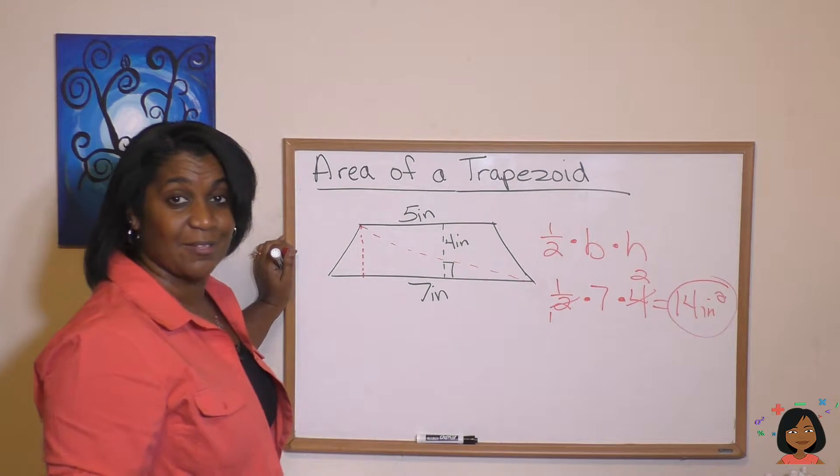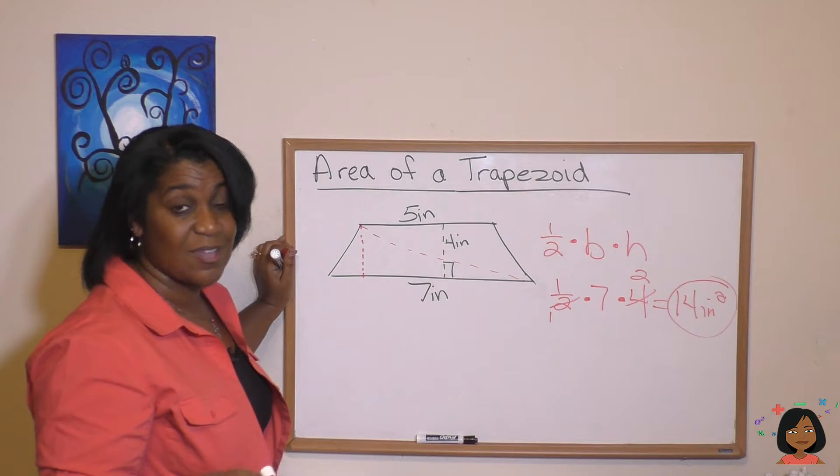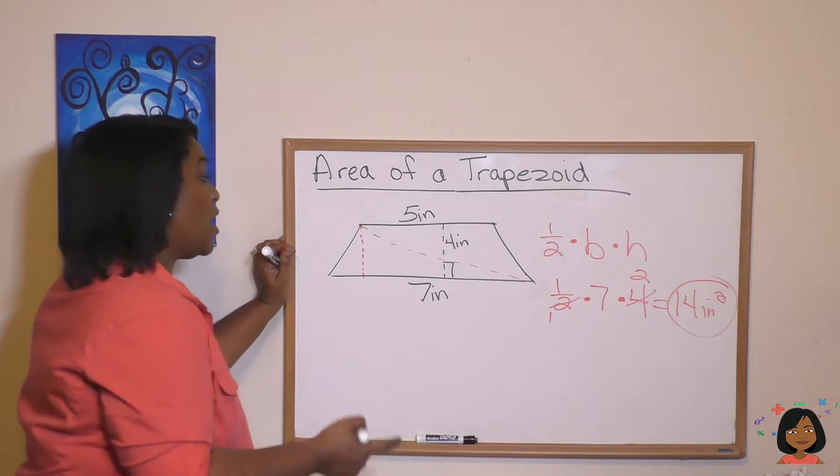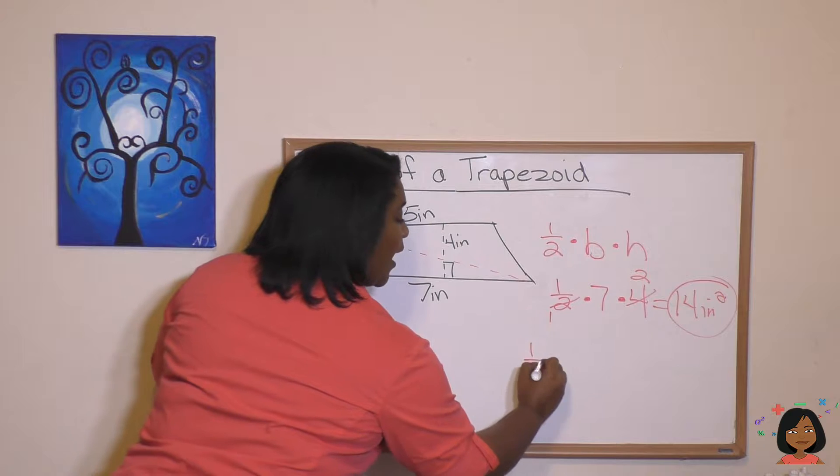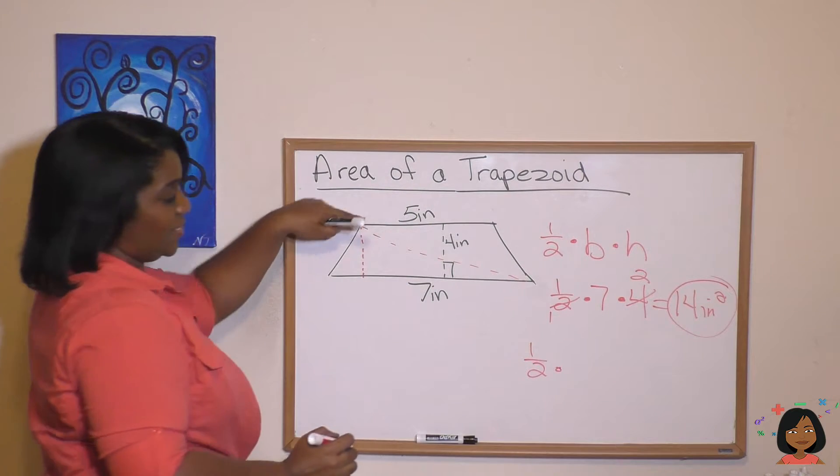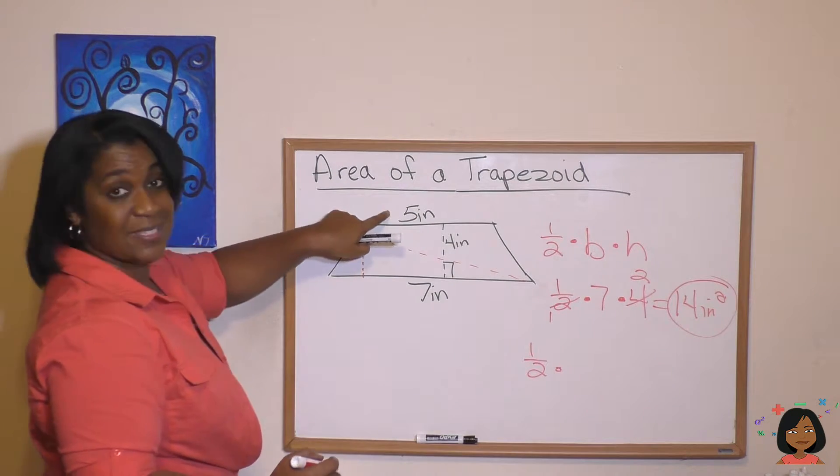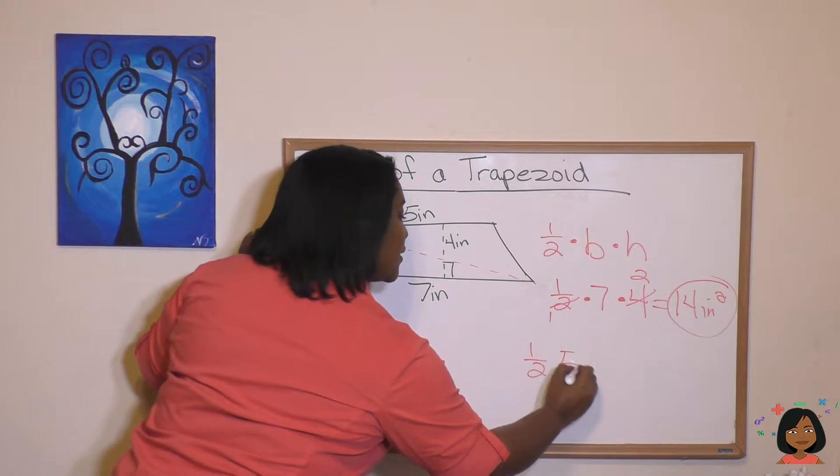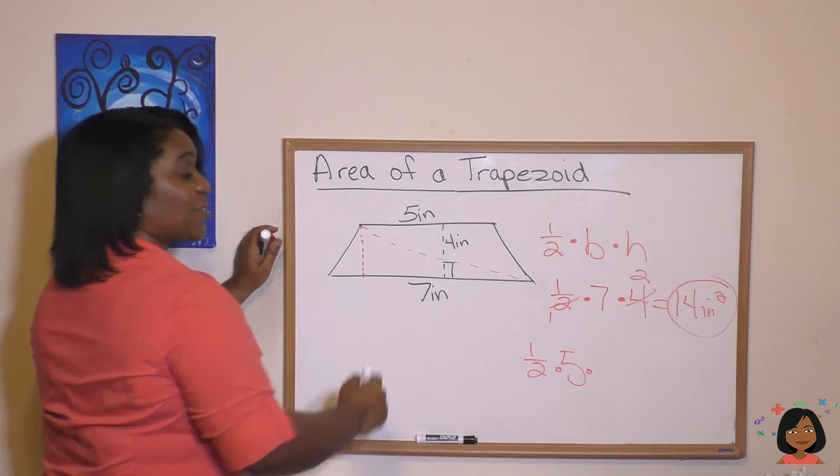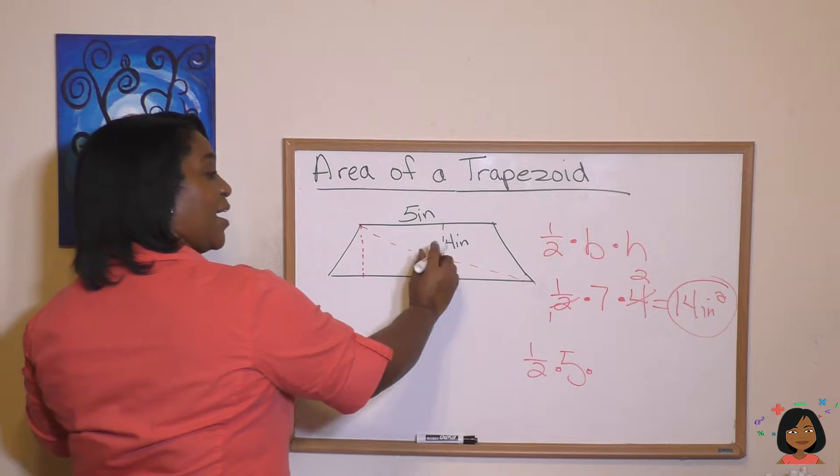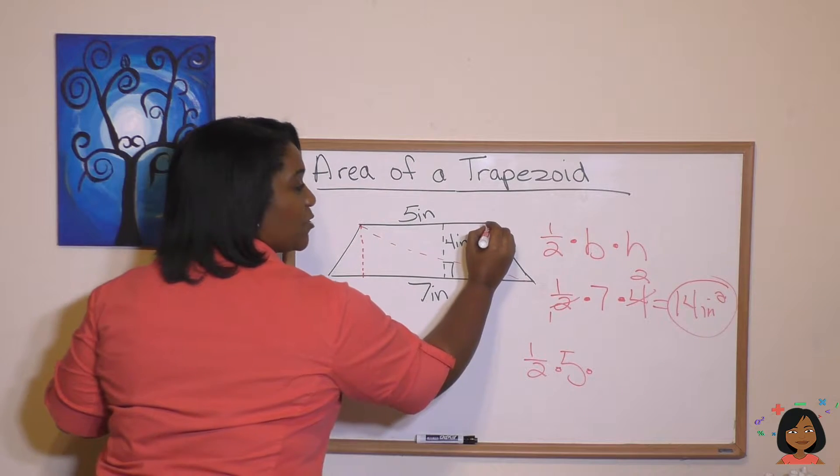We've got to do the second triangle, but the formula still applies. One half base times height. Well, what do we have? We've got our one half. Our base this time is going to be this triangle up here. So our base is going to be five. And what's our height? Guess what? It's still going to be the same height, but I'm just going to shift it over here so you can see it better.